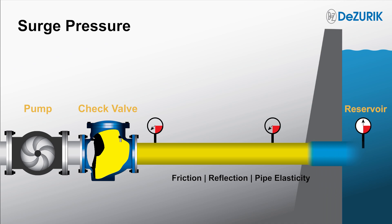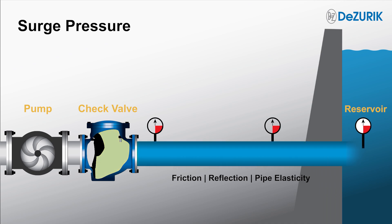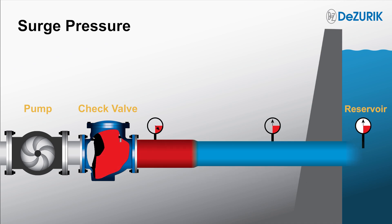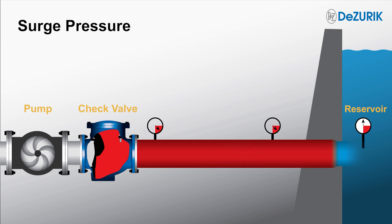These losses dampen the surge waves until the system comes to rest. To help manage and protect your system from these fluctuations, Desertic offers a free surge analysis service. They will review your process data and recommend the optimal valve solutions to safeguard your pumping system.